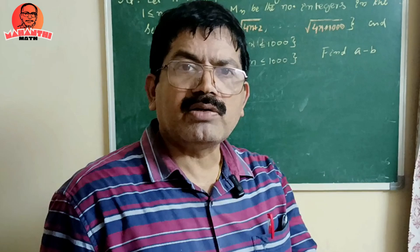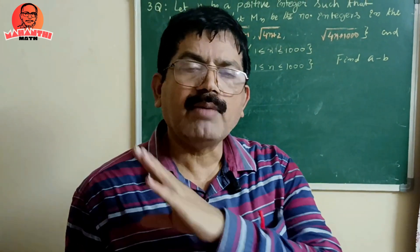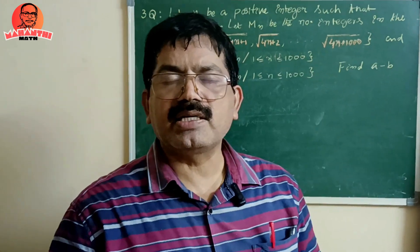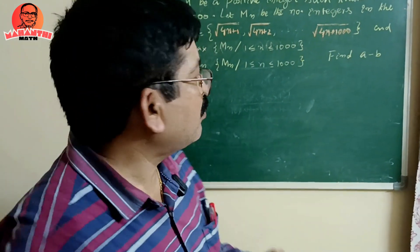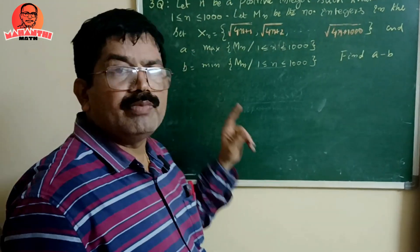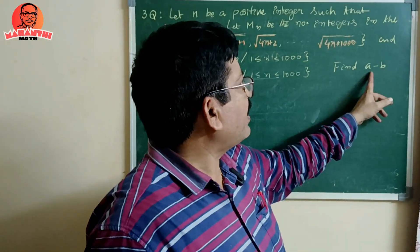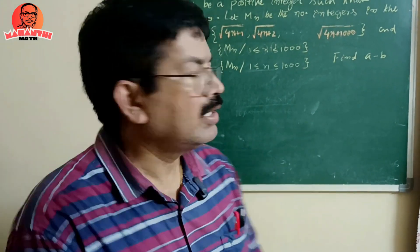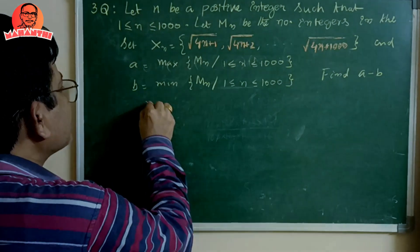Since n values are 1 to 1000, there are sets X1, X2, X3, ... up to X1000 — a thousand sets. And mn is the number of integers in each set, giving m1, m2, m3, ..., m1000. Out of these, the maximum is A and the minimum is B, and we have to find A minus B. So we need to find A and B individually.